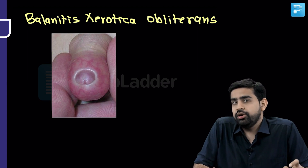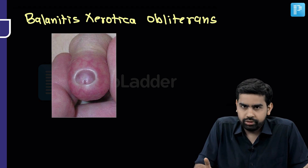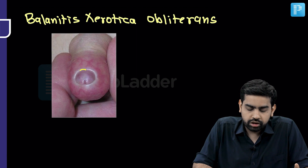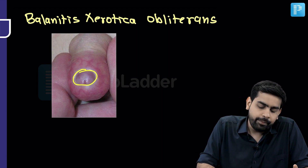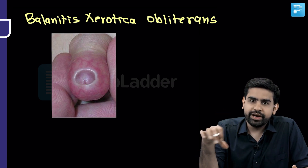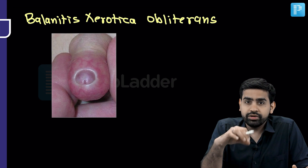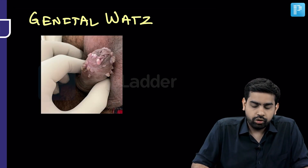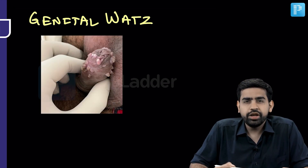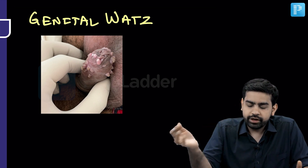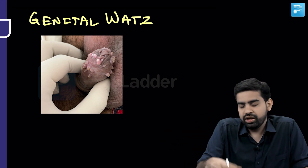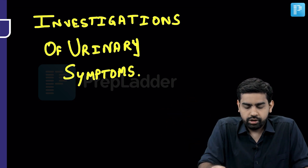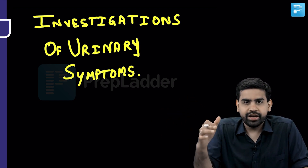Balanitis xerotica obliterans (BXO) is a pre-malignant condition for penile carcinoma. You appreciate it as a very dense white lesion in the preputial area. Genital warts — condyloma acuminata — are warty lesions on the penis caused by HPV infection and are also a pre-malignant condition. These are the important images to recognize on clinical examination.